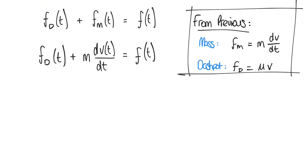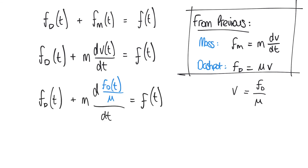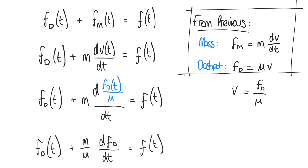From the dashpot equation Fd equals μV, we rearrange to V equals Fd/μ, and substitute this for V in the equation, converting the velocity term to one in terms of Fd. This gives Fd(t) plus M·d(Fd/μ)/dt equals F(t). Since μ is a constant, we can take it outside the derivative, tidying up to give M/μ·dFd/dt plus Fd(t) equals F(t). This is another first order differential equation with the output Fd on one side and the input F on the other.